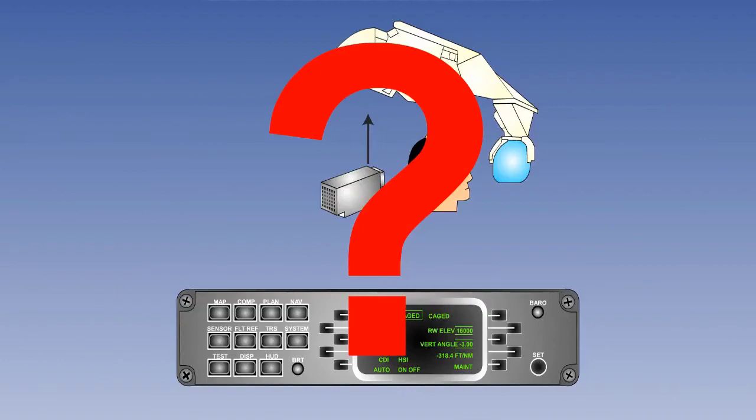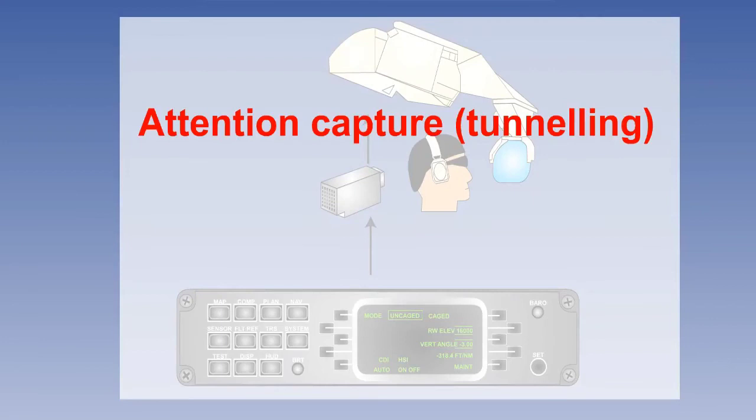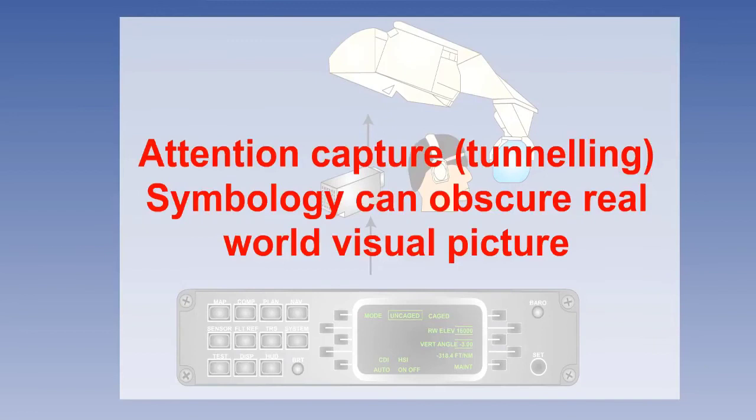Two operating problems have come to light with the introduction of HUD technology, although the benefits gained greatly outweigh these limitations. The first is attention capture, also known as tunneling. Pilots can concentrate on the HUD data and disregard external, real, visual information. The second is that it is possible for the display imagery to obscure or cover important external, real features.